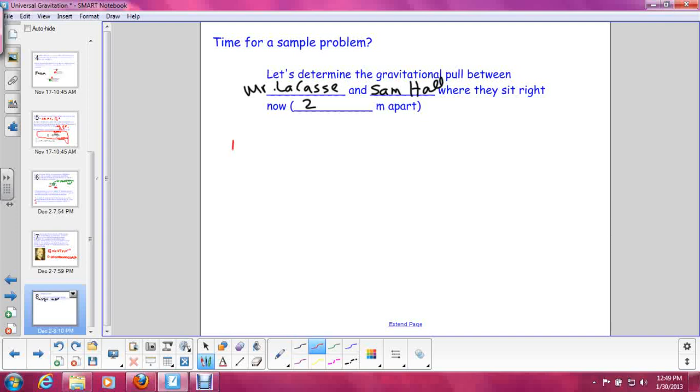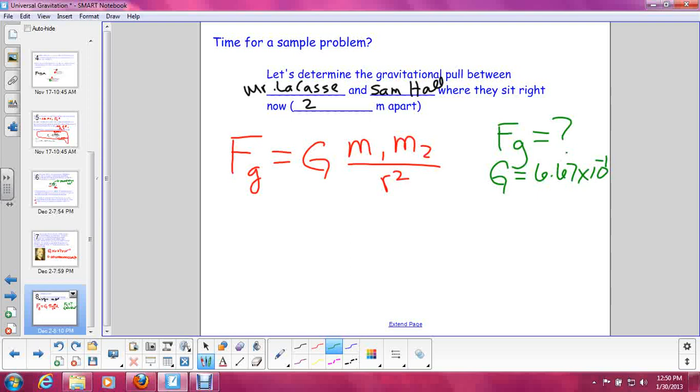So, let's say that they are standing two meters apart. Our equation for universal gravitation is G times M1 M2 over R squared. Hopefully, you are looking at this right now saying, wait a second, we do not have enough information to solve this problem. Because you would be absolutely right. We know G is always 6.67 times 10 to the minus 11th. We also know that the distance between them is two meters. What we are missing right now are their masses. So let's go ahead and assume that both of them have a mass of 70 kilograms.